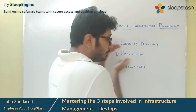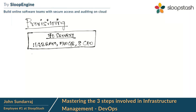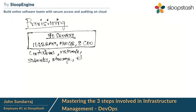Now let's move on to the second step: provisioning. Provisioning means provisioning of infrastructure components. In the last step we derived numbers — 70 servers, each with 16 GB of RAM, 500 GB of storage, and 8-CPU machines. But capacity planning doesn't stop with servers alone. Sometimes we also need to derive the number of containers, the network required, the subnets, the storage, and lots of other components.